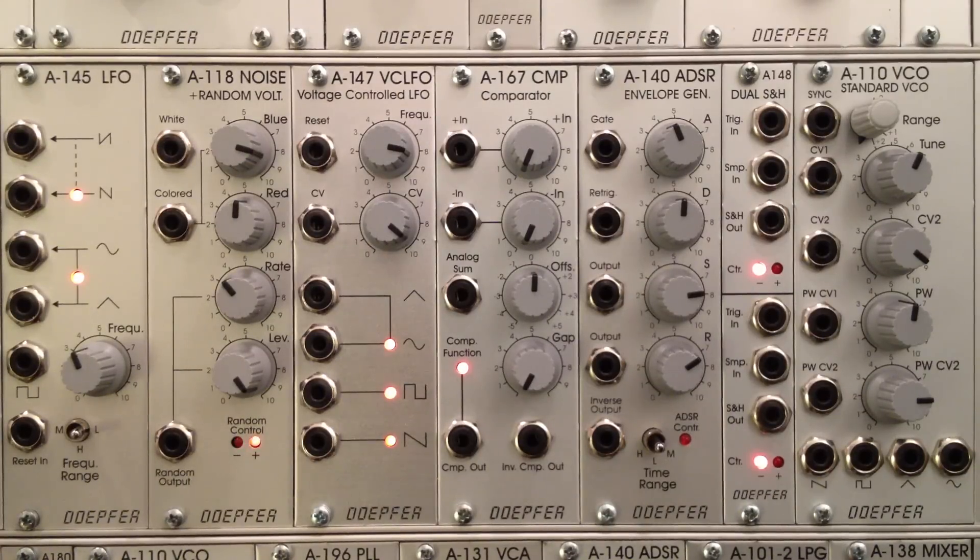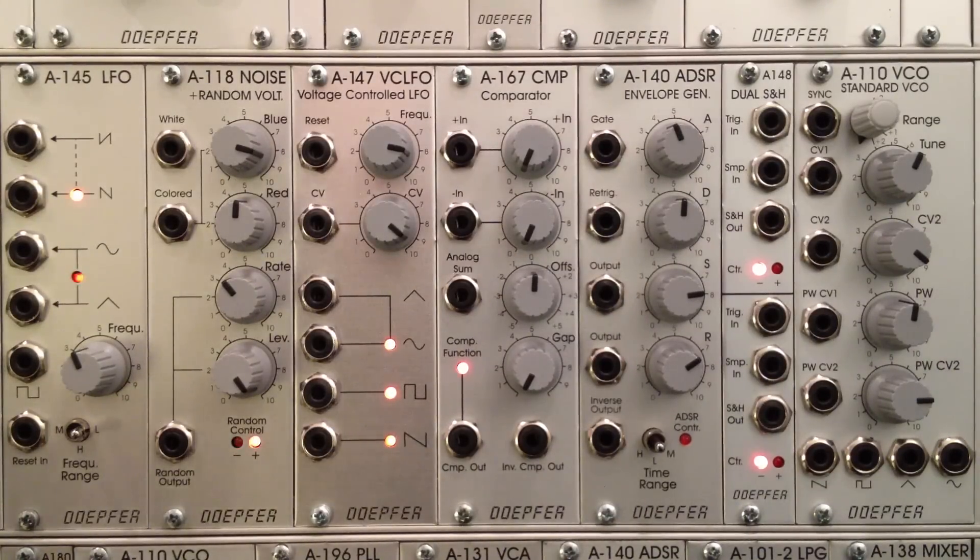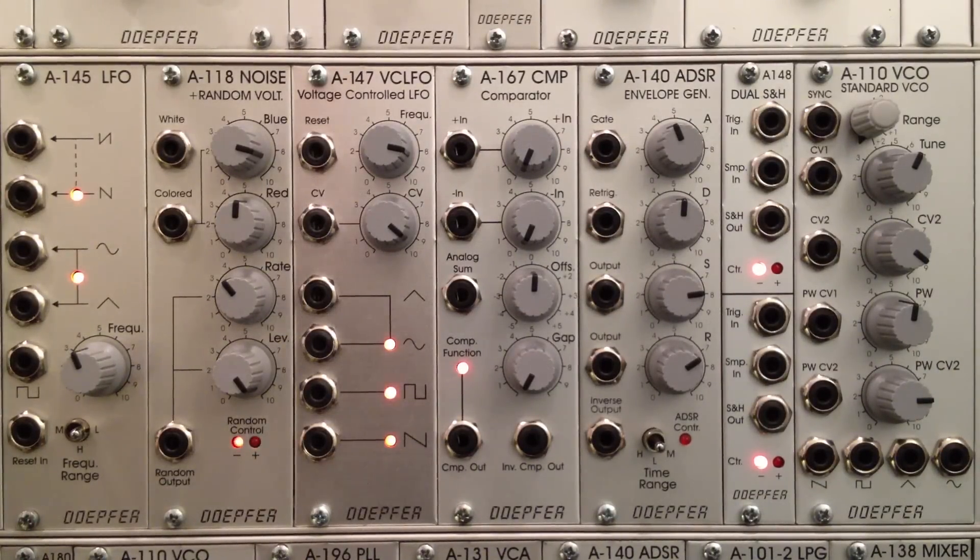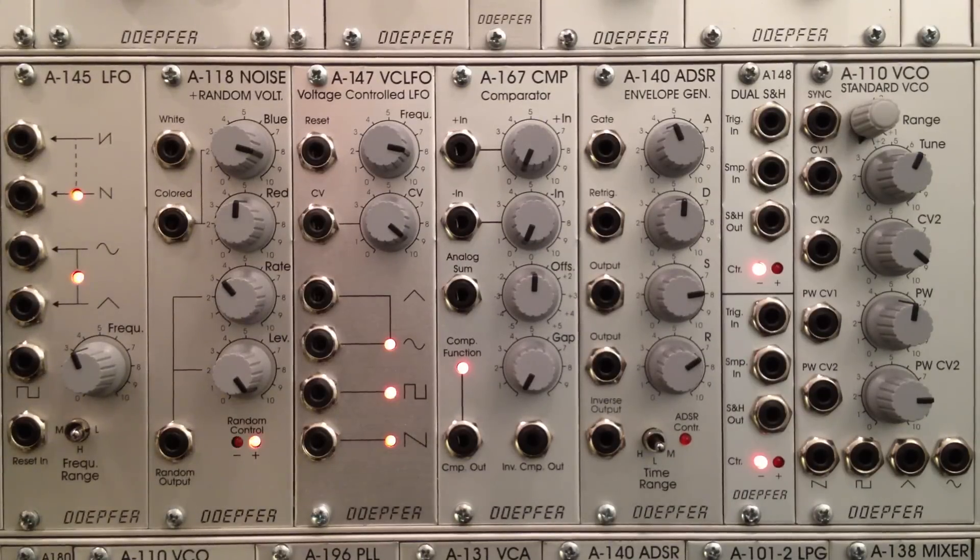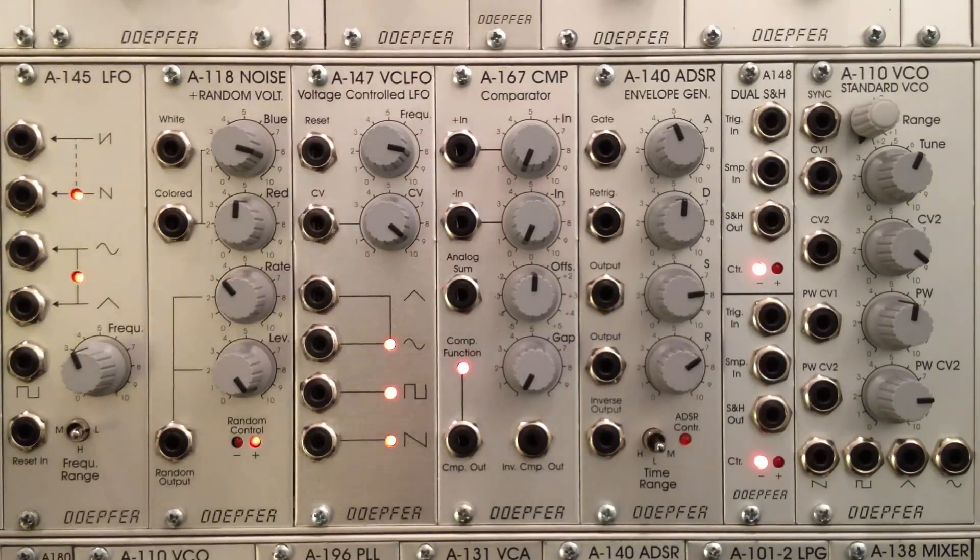Alright, and welcome back to the next part of the Doepfer A167 comparator module. This time around we're going to be looking specifically at the A167's offset features as well as the comparator gate outputs. I decided to split this into a separate section just because I wanted to spend a little bit more time looking at our friend down here at the bottom.